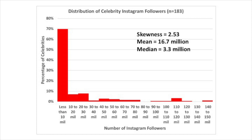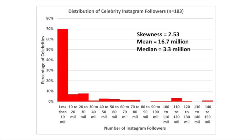Here's a histogram showing the distribution of Instagram followers for a sample of 183 celebrities. This information was collected by students in one of my classes, as of fall 2018. You can see it has very strong skew to the right — about 70% of the celebrities had fewer than 10 million Instagram followers, while a very small percentage had between 140 and 150 million. The skewness statistic is 2.53, which well exceeds 1, indicating very strong skew. The mean number of followers is 16.7 million, far exceeding the median of 3.3 million — further evidence of a skewed distribution.